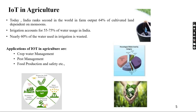How do we implement IoT in agriculture? Today, India ranks second in the world's farm output. 64% of cultivated land depends on monsoon. Irrigation accounts for 55–75% of water usage in India. Nearly 60% of the water used in irrigation is wasted. Applications of IoT in agriculture include crop water management, pest management, food production and safety, etc.